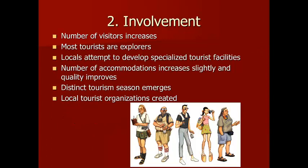The second stage is called involvement. In this stage, the number of visitors increases, though most tourists are still explorers. Locals attempt to develop specialized tourist facilities to attract more visitors. The number of accommodations increases slightly and their quality improves — more hotels, improved road infrastructure, an airport being built, and tourist attractions on natural features like beaches. A distinct tourism season emerges, and it's usually in this stage where we start to see local tourist organizations created.